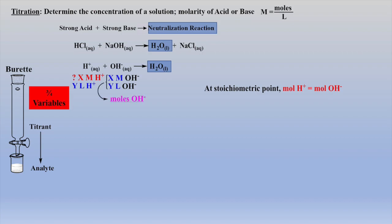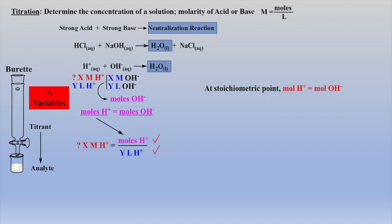In this example, the molarity and volume of base can be converted to moles base, which are equal to moles acid at the equivalence point. Thus, with moles acid and volume acid known, the molarity of acid can be calculated. The key is moles acid equals moles base at the equivalence point.